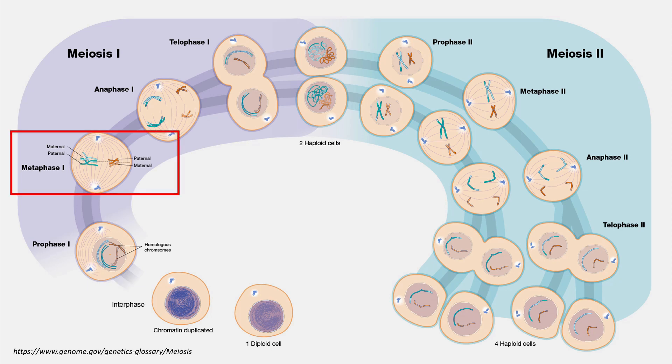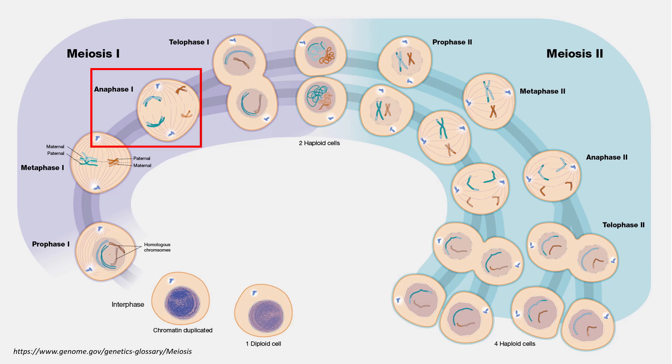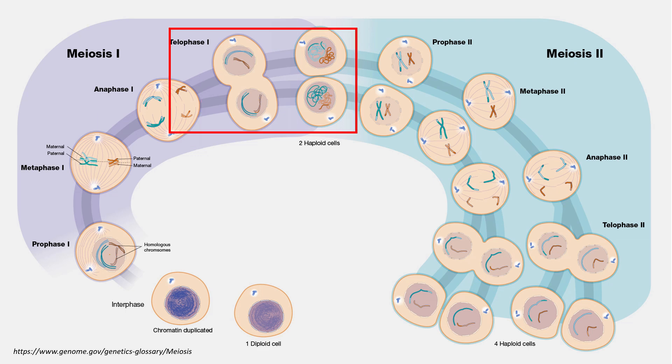In metaphase I, the chromosomes align independently of one another in a process called independent assortment. The random orientation of chromosome pairs leads to different combinations of maternal and paternal chromosomes in the sex cells. Independent assortment is another way genetic variation can occur. In anaphase I, the whole chromosomes are pulled apart by the spindle fibres to opposite poles. In telophase I, the nuclear membrane forms around the chromosomes, and cytokinesis occurs where the cytoplasm splits, resulting in two cells.